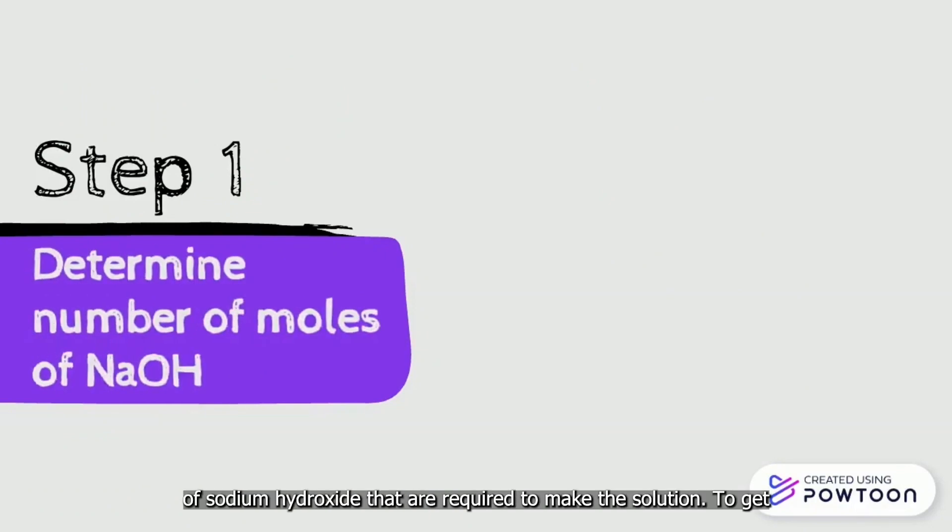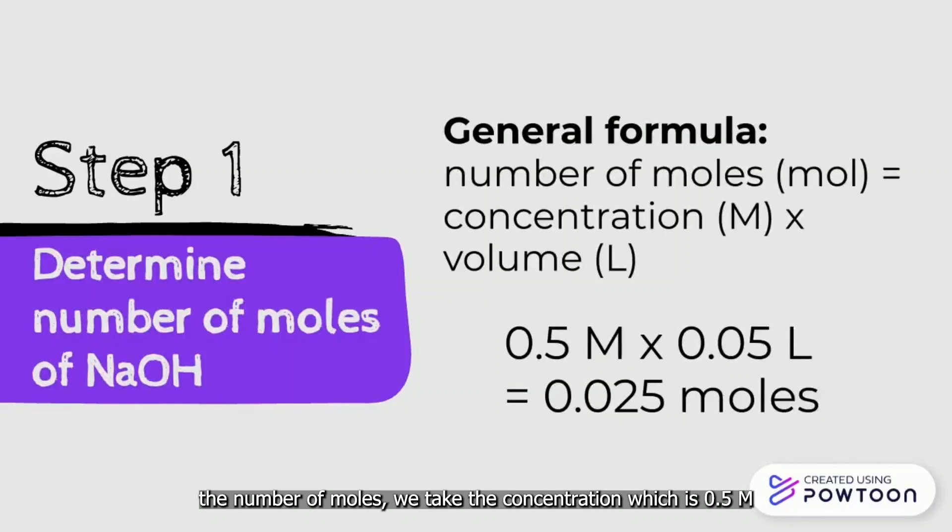Firstly, we need to get the number of moles of sodium hydroxide that are required to make the solution. To get the number of moles, we take the concentration which is 0.5 molar times the volume which is 50 mL. However, we need to convert 50 mL to L which will become 0.05 L.